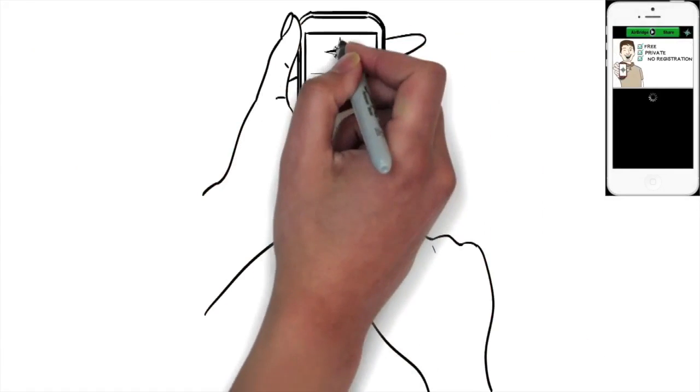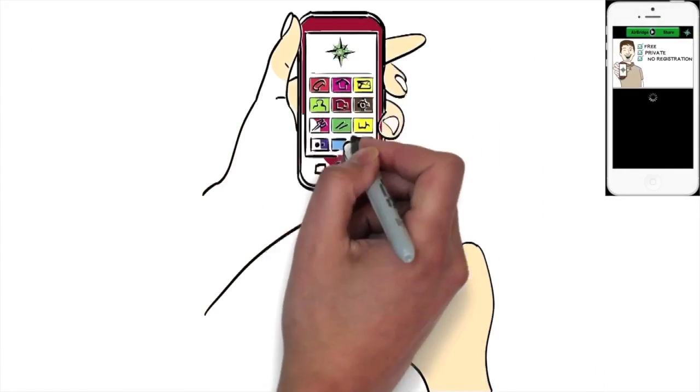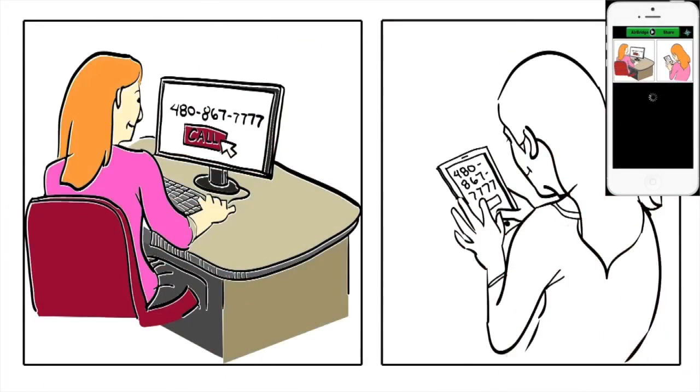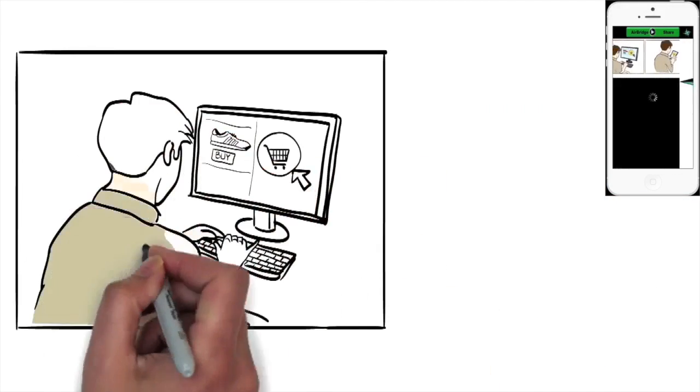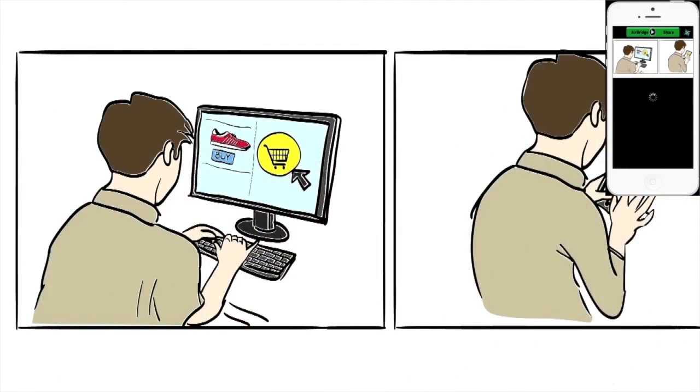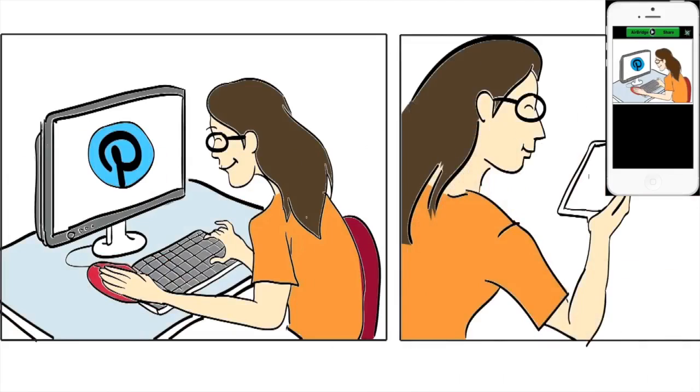And because we use sound instead of radio, you can send an AirBridge pulse right from any web page, as well as a YouTube video, hotel room info channel, audio button, podcast, and even a TV commercial.